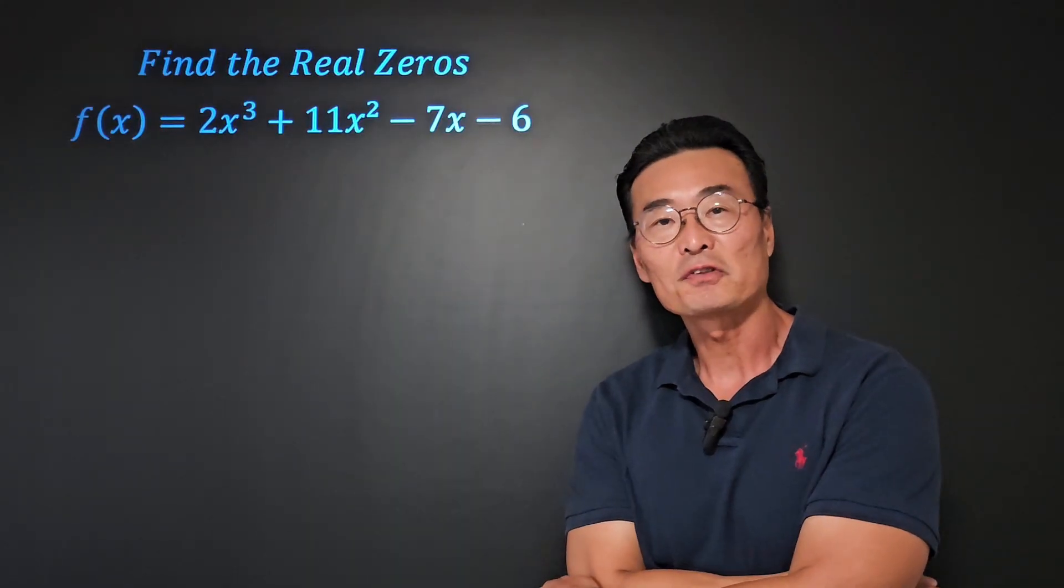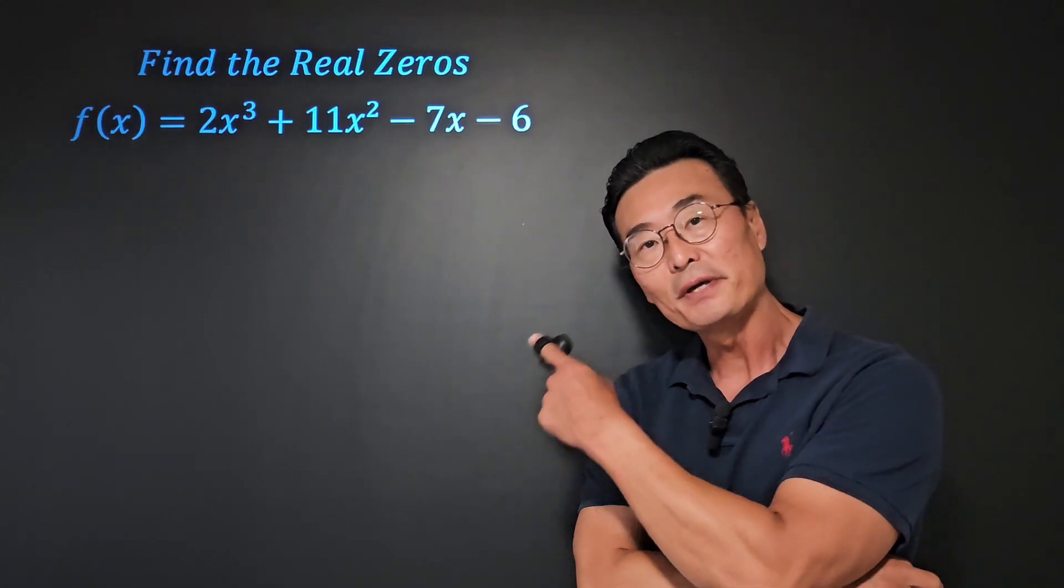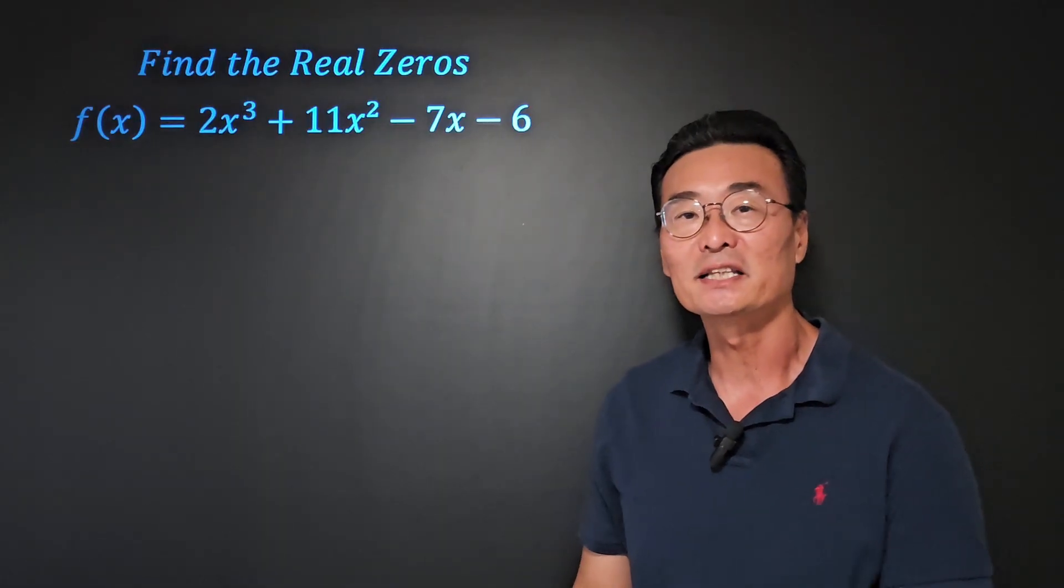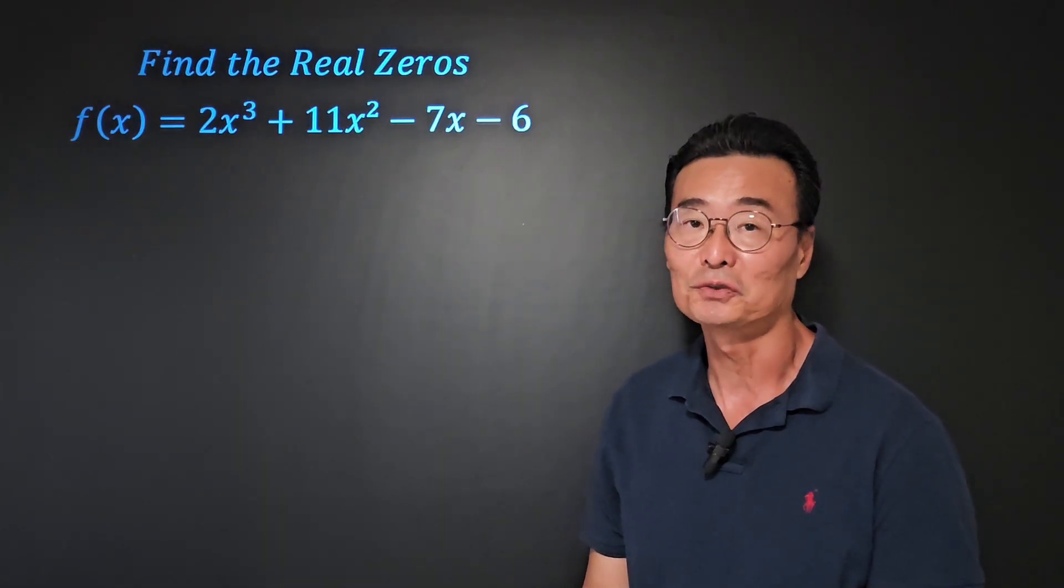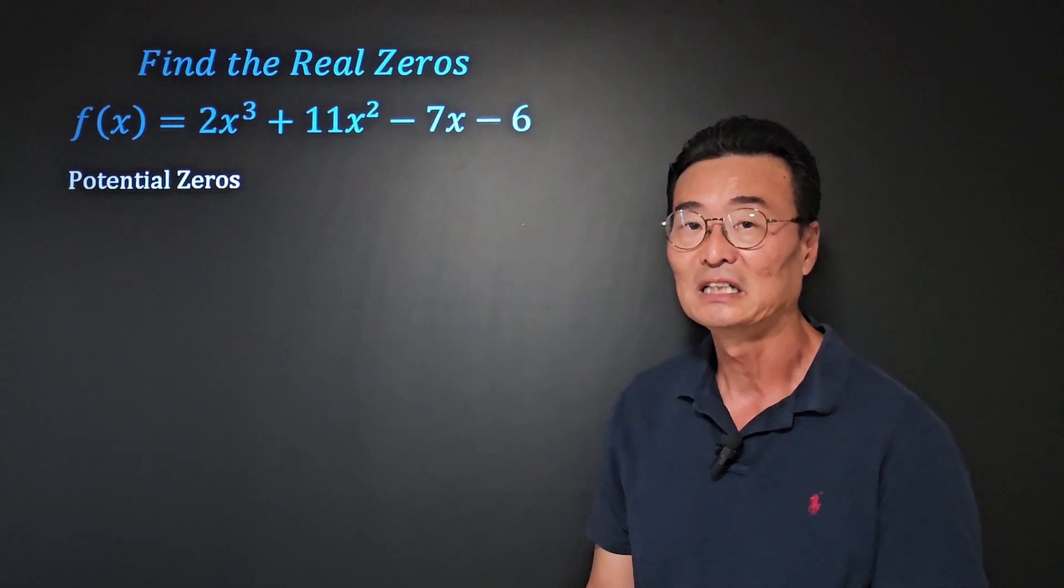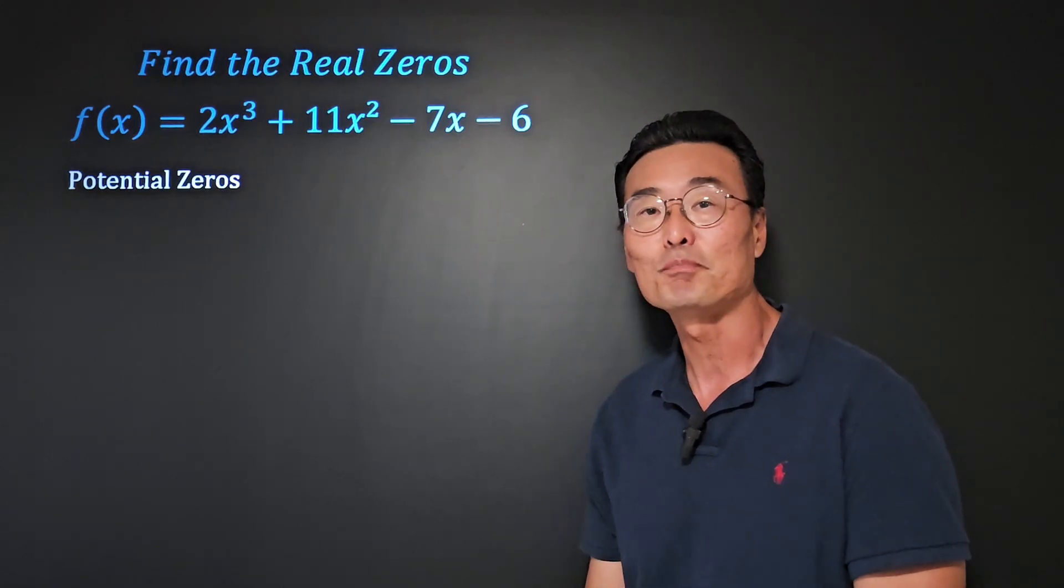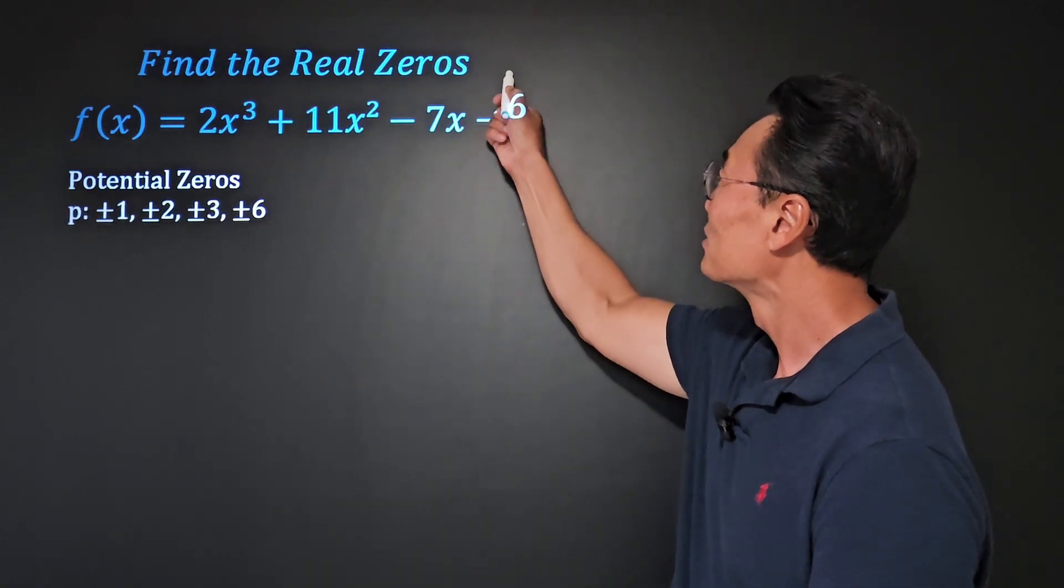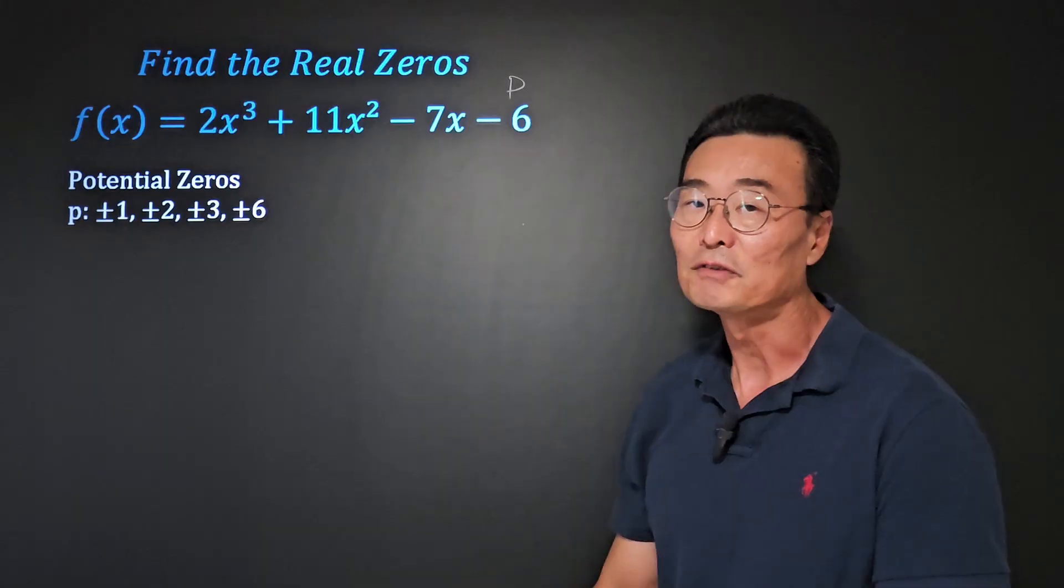If you want to find the real zeros of a polynomial function, this method will always work. To do this, we want to go ahead and find the possible or potential zeros of the function first. To do that, we need to find p's, and p's are going to be the factors of the constant of the polynomial function.